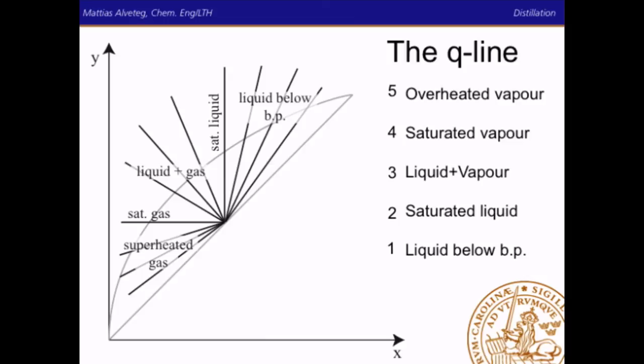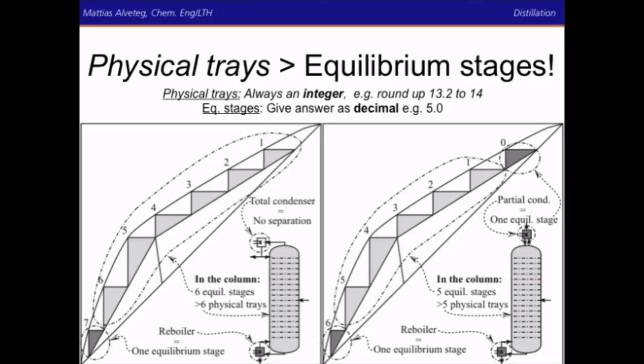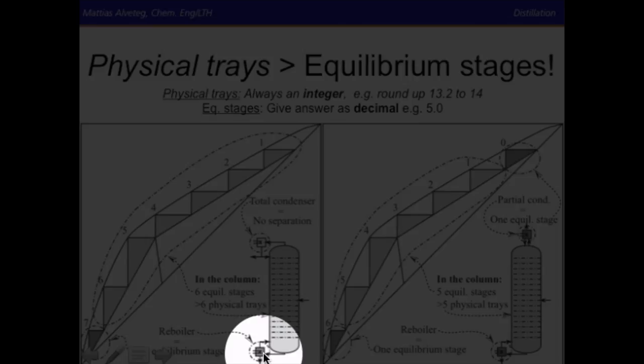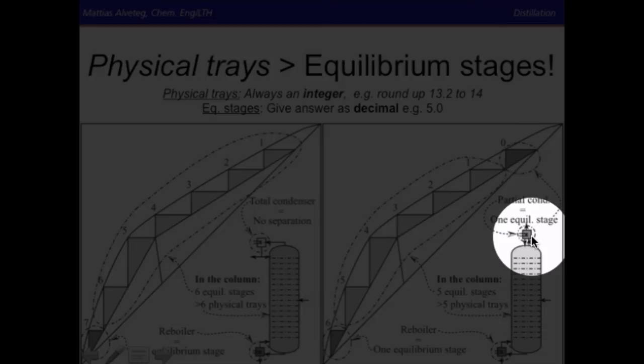Remember that the number of physical trays is always larger than the number of equilibrium stages. If you're asked how many physical trays are needed, you must answer with an integer — if you get 13.2, you round up to 14 because 13 is not enough. If asked to calculate the number of equilibrium stages, give that as a decimal, for example 5.0 or 7.1. When calculating the number of physical trays you are typically given an overall tray efficiency, but remember to compare only the equilibrium stages within the column. If you have a reboiler, that is one equilibrium stage outside the column, and if you have a partial condenser, that is also one equilibrium stage outside the column.